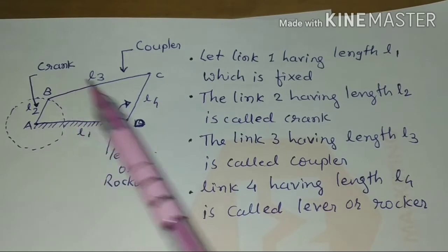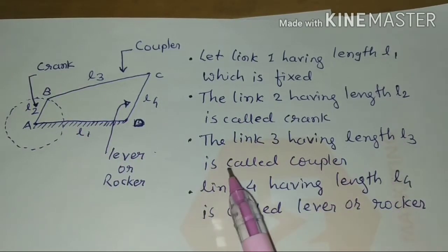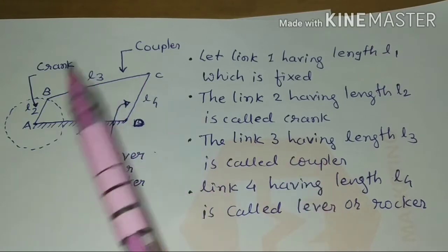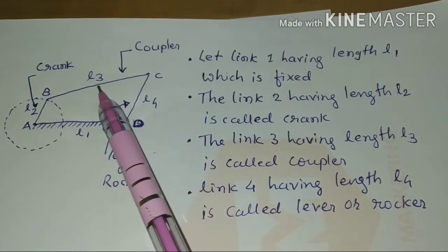The link 3 having length L3 is called coupler. We call it coupler, the B to C link L3.